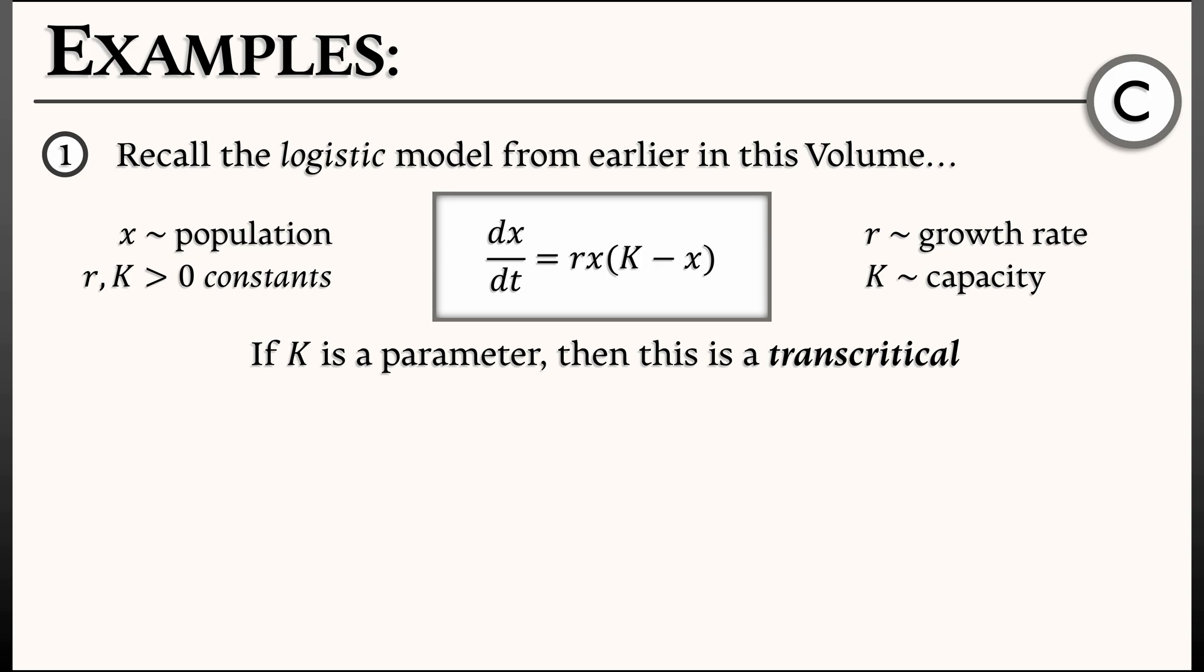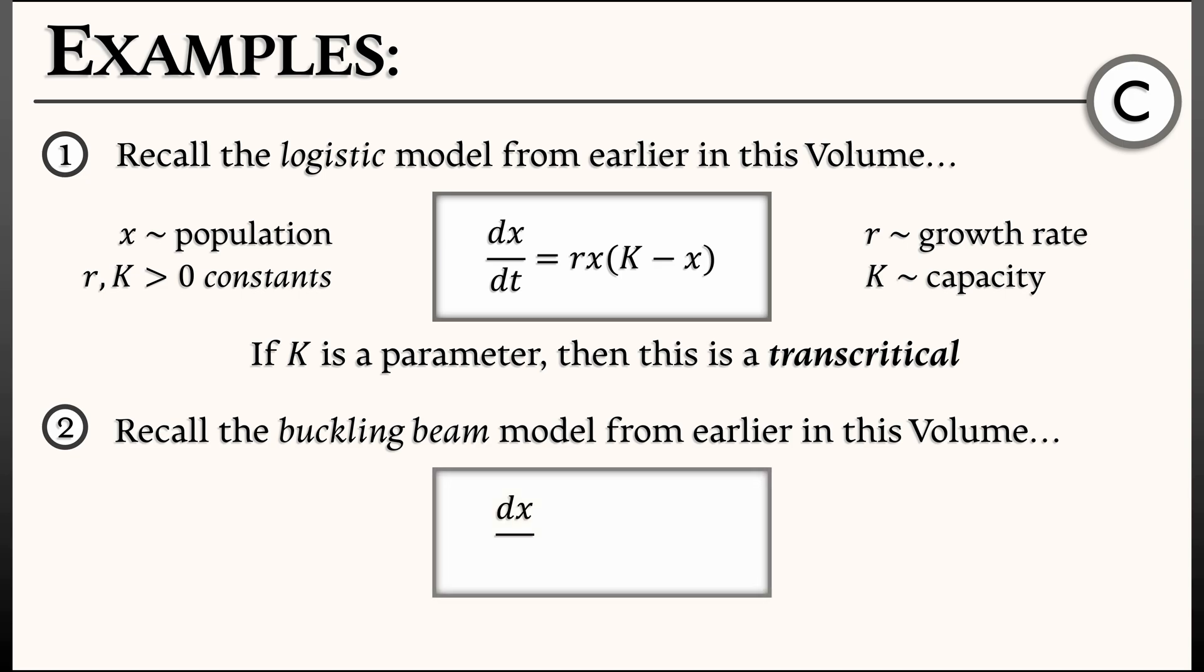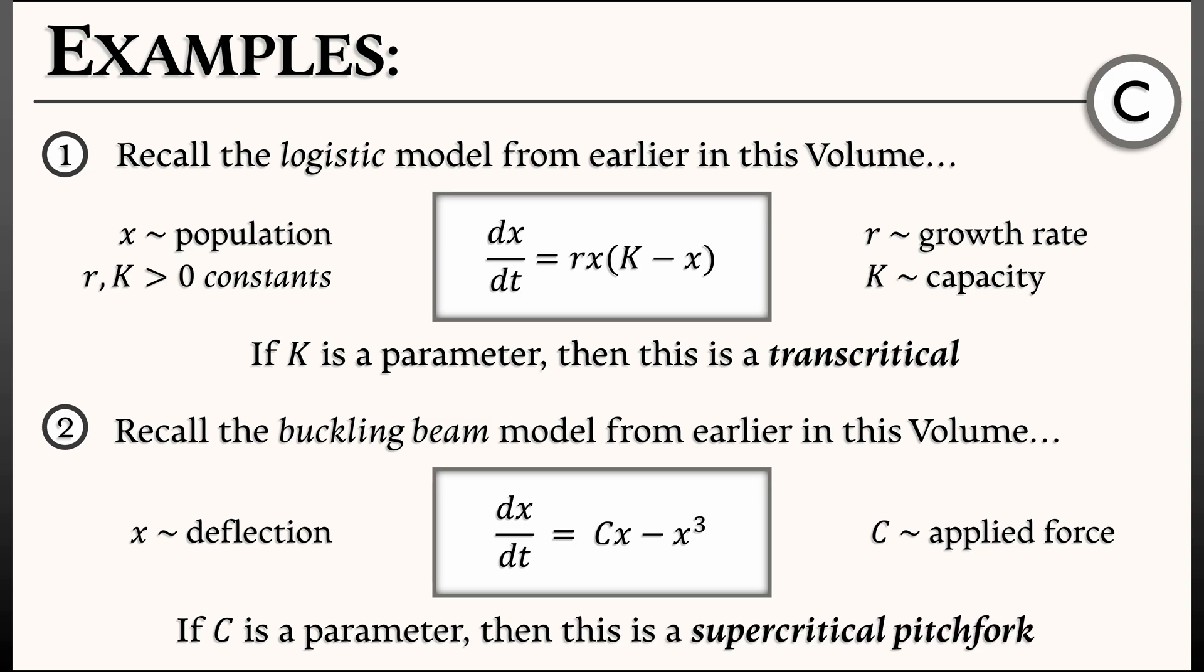And there's at least one other example that we have seen that is straight out of the normal forms. That's the buckling beam model from an earlier chapter where dx dt equals c times x minus x cubed. x is a deflection of a thin beam, and c was a constant that had to do with the force that was applied to that beam. If we think about that c as a parameter, then this is precisely the normal form for a supercritical pitchfork bifurcation.